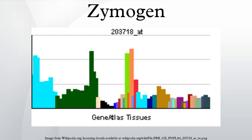Examples of zymogens include: angiotensinogen, trypsinogen, chymotrypsinogen, pepsinogen, most proteins in the coagulation system, some of the proteins of the complement system, procaspases, pacifastin, prolystase, prolypase, and procarboxypeptidase S.